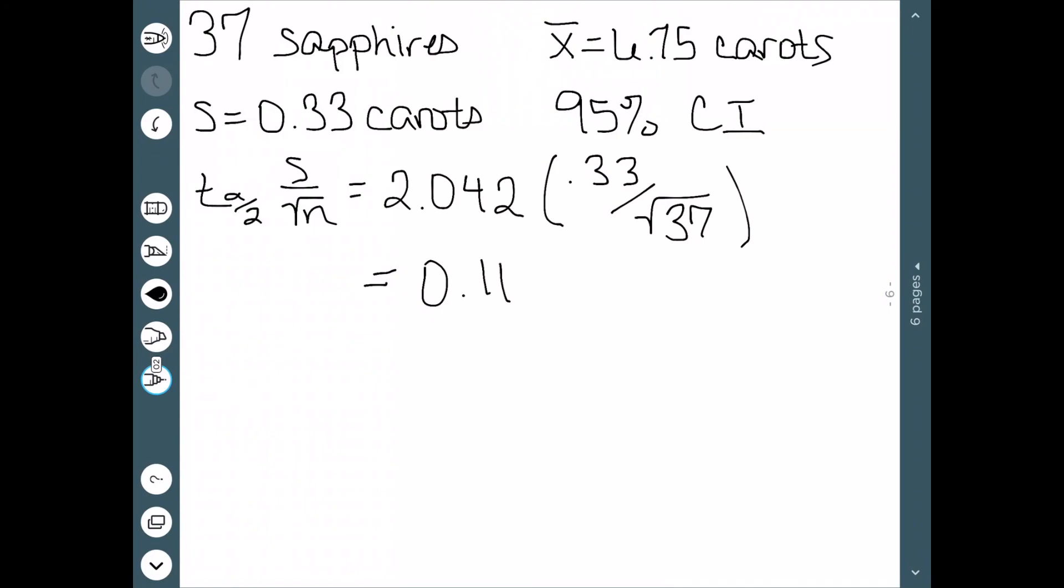We now add and subtract this from the mean. So 6.75 minus 0.011 is less than the actual mean, which is less than 6.75 plus 0.011. So the actual mean is going to be somewhere between 6.64 and 6.86 carats.